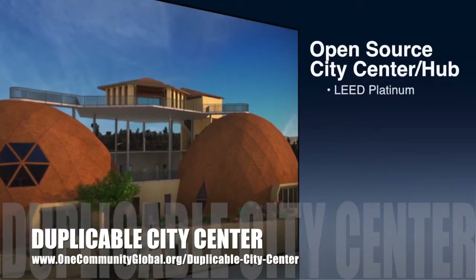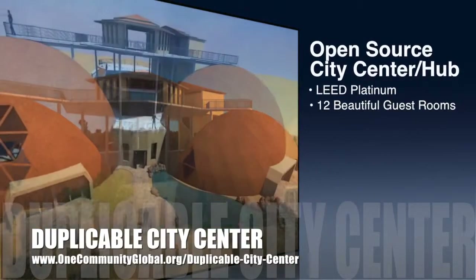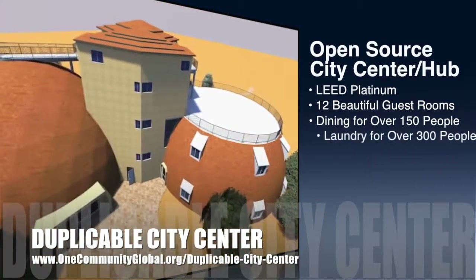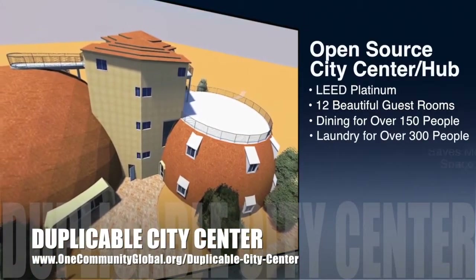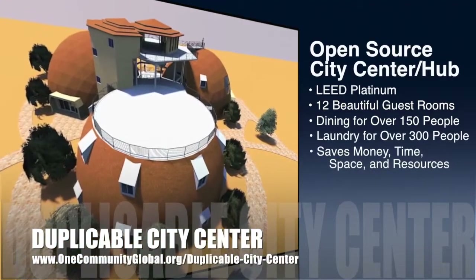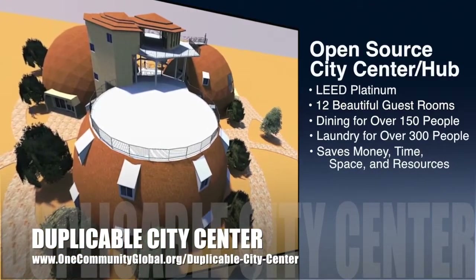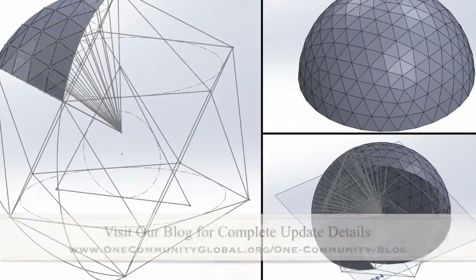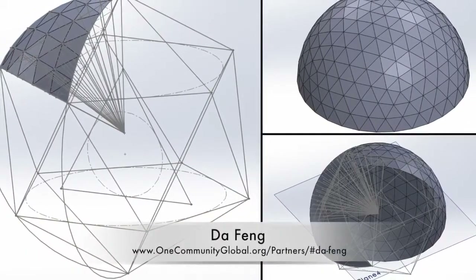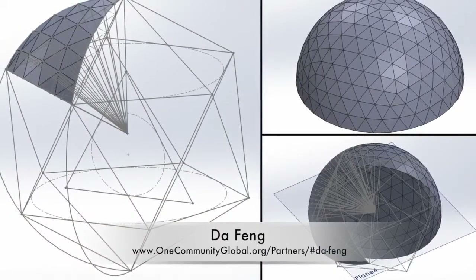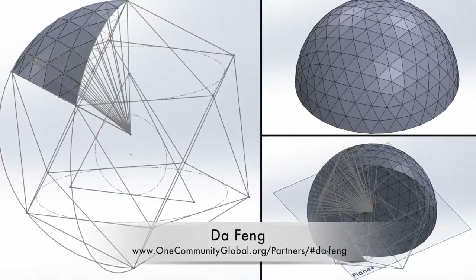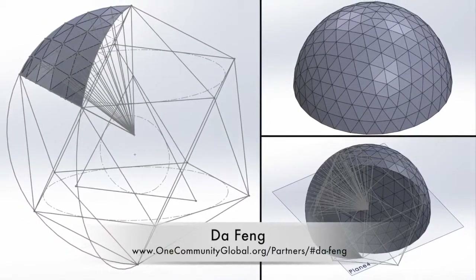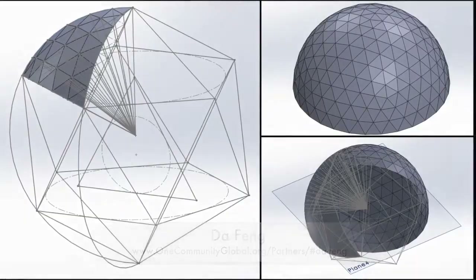The duplicable city center is designed to be LEED Platinum certified, provide 12 guest rooms, dining for over 150 people, and laundry and recreation space for over 300 people, all while saving money, time, space, and resources. This week, Da Feng, aerospace and mechanical engineering student, modeled the initial structure for the Ducal City Center domes in SolidWorks. When complete, this modeling will allow us to run complex structural calculations on these domes.